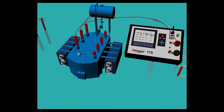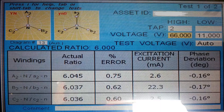We connect the H terminal of the TTR testing set to the HV terminals of the transformer, and the X terminal of the TTR set to the LV terminals of the transformer. After that, we press the test button on the TTR set and it will start performing the TTR test.